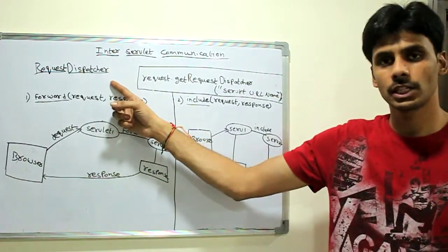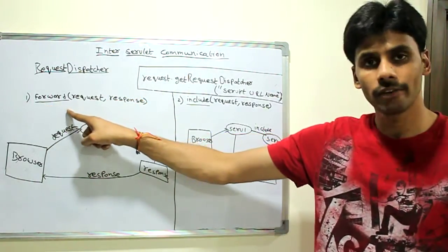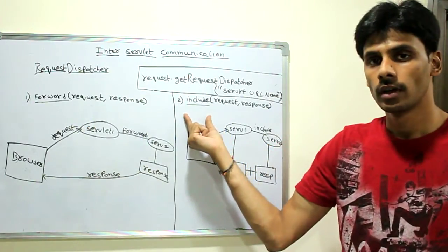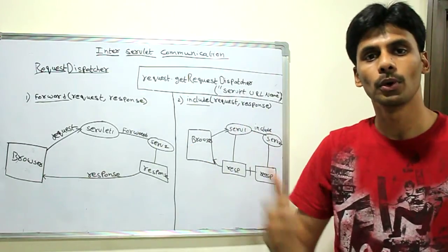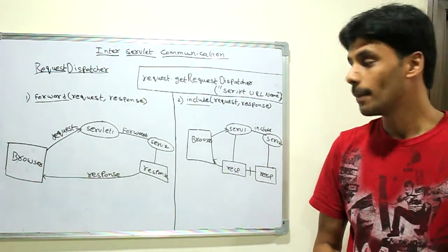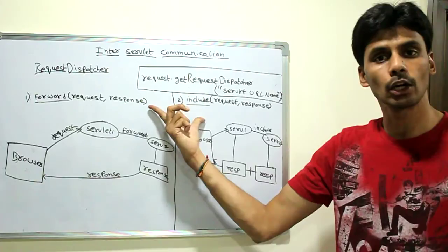Once you have a request dispatcher, you can either use forward or include. The forward and include both of them take the request and response that your doGet, doPost or service method gets. But the main difference between forward and include is...